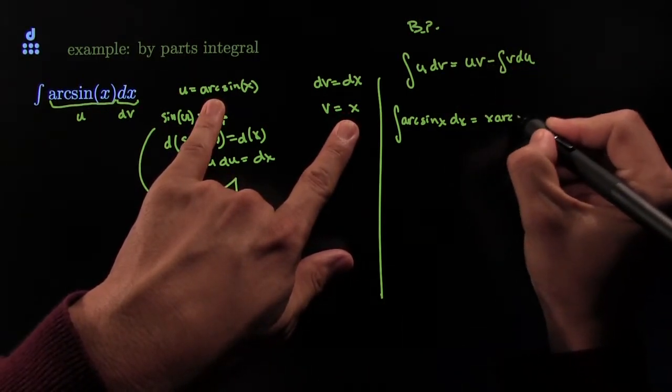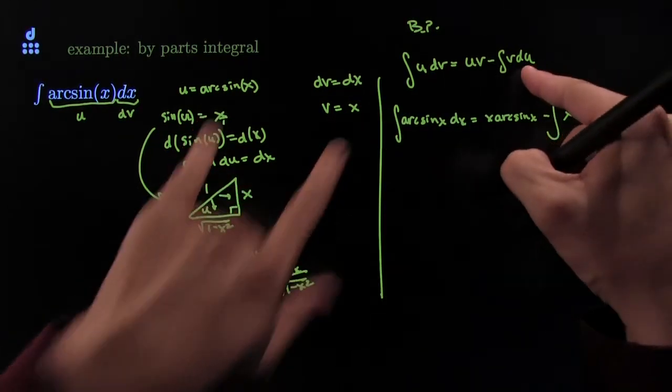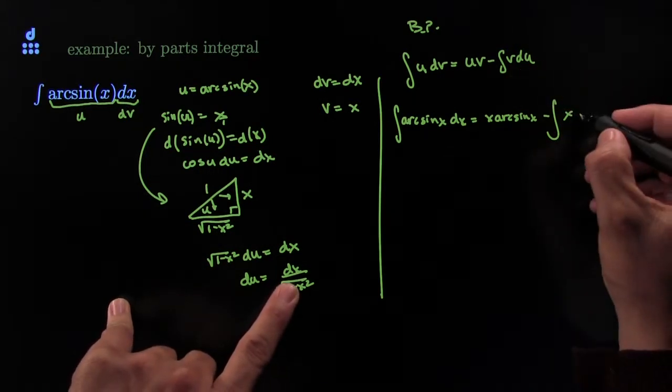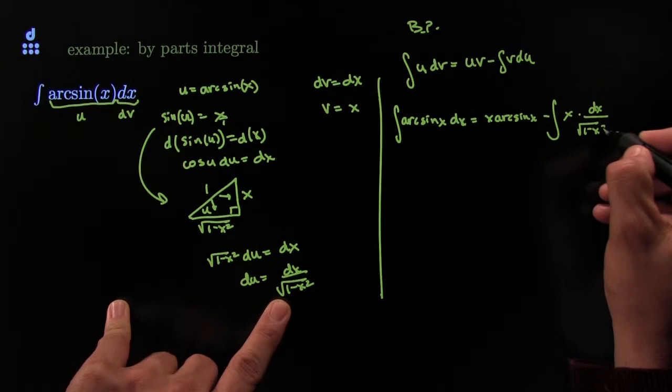x arcsine of x minus integral of v, that's my v here, times du. du is over here, so it would be dx all over the square root of 1 minus x squared.